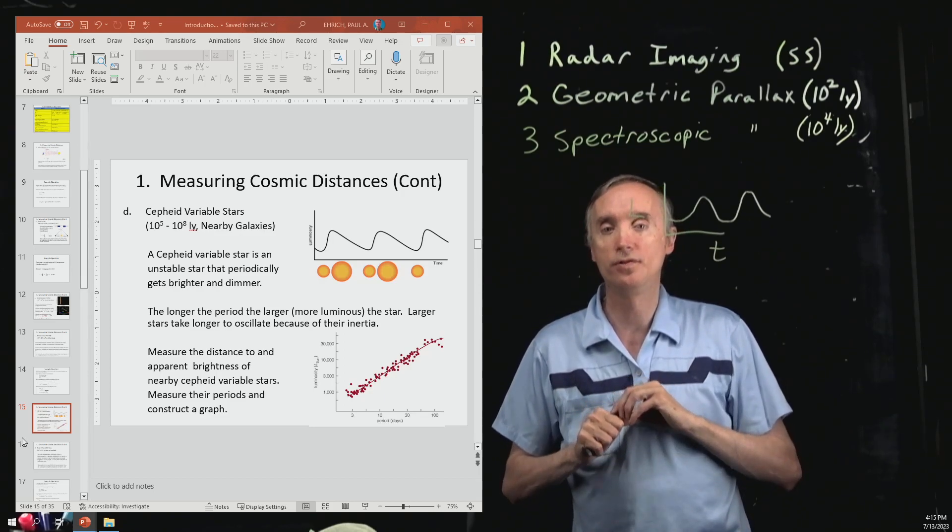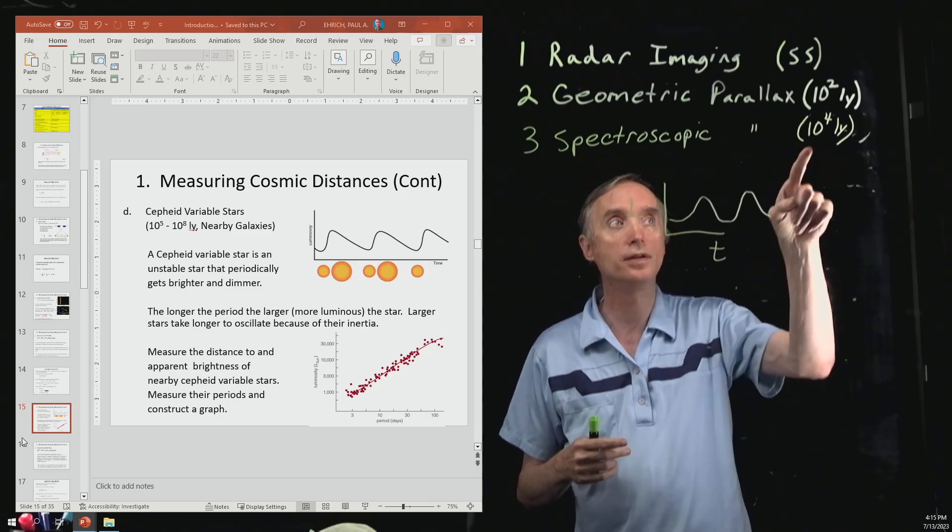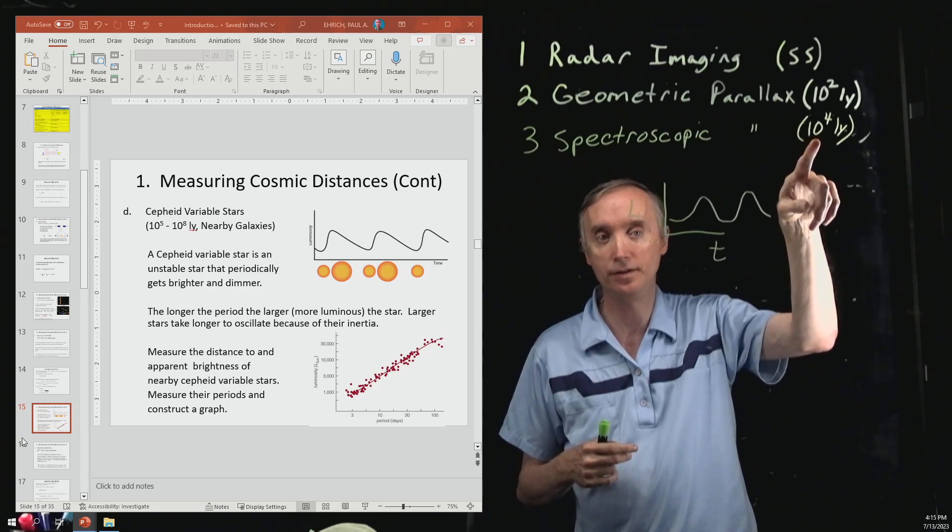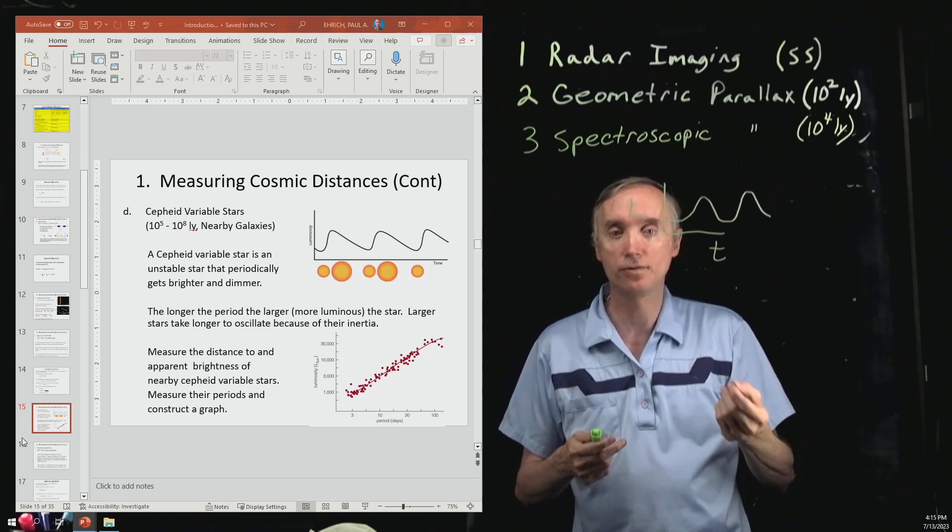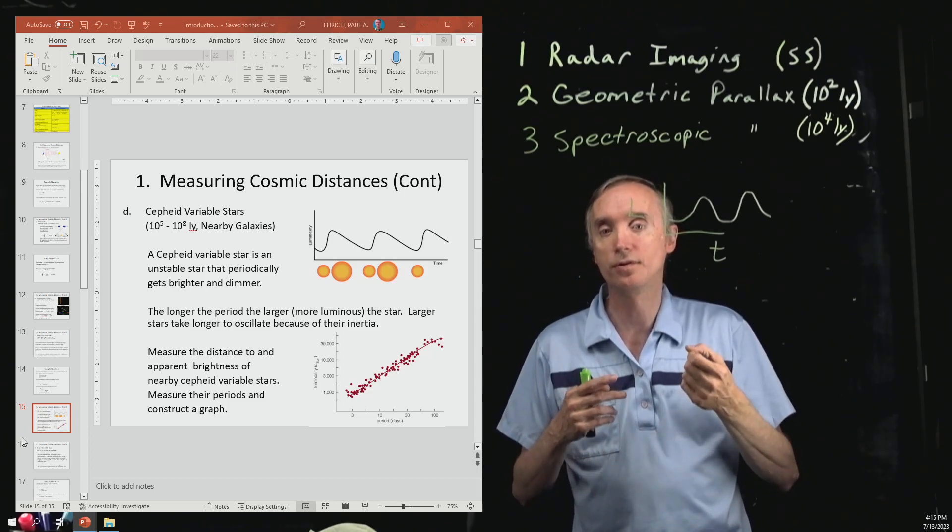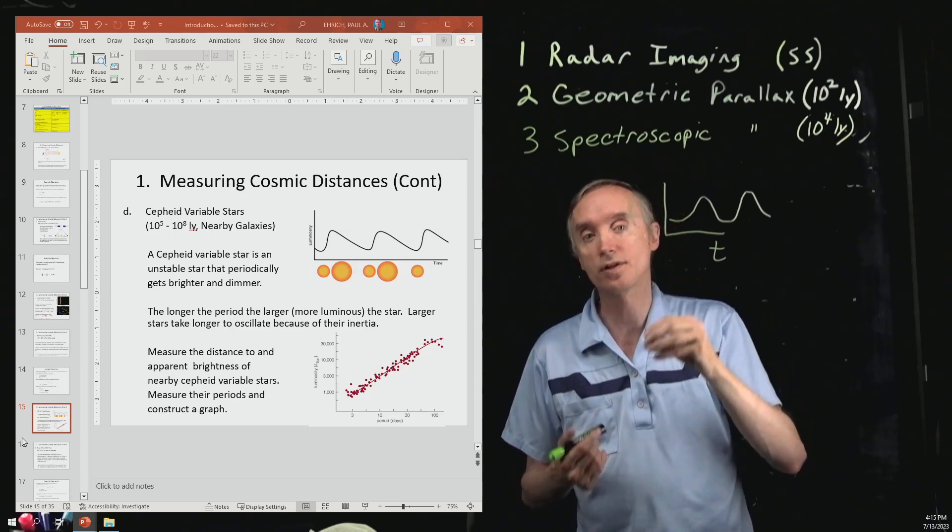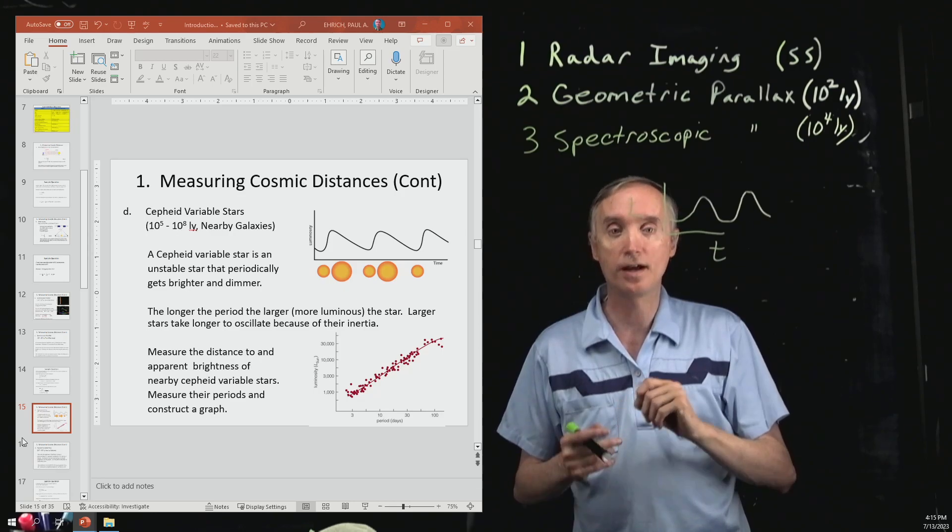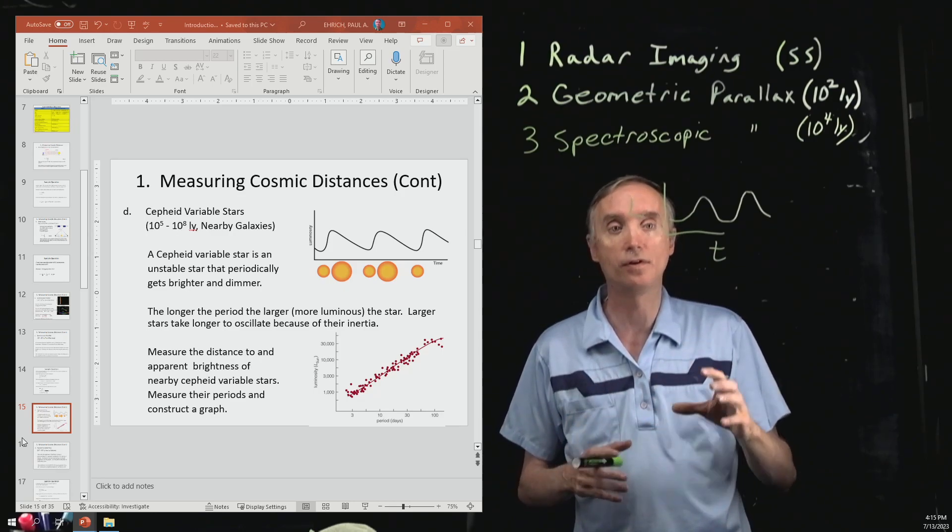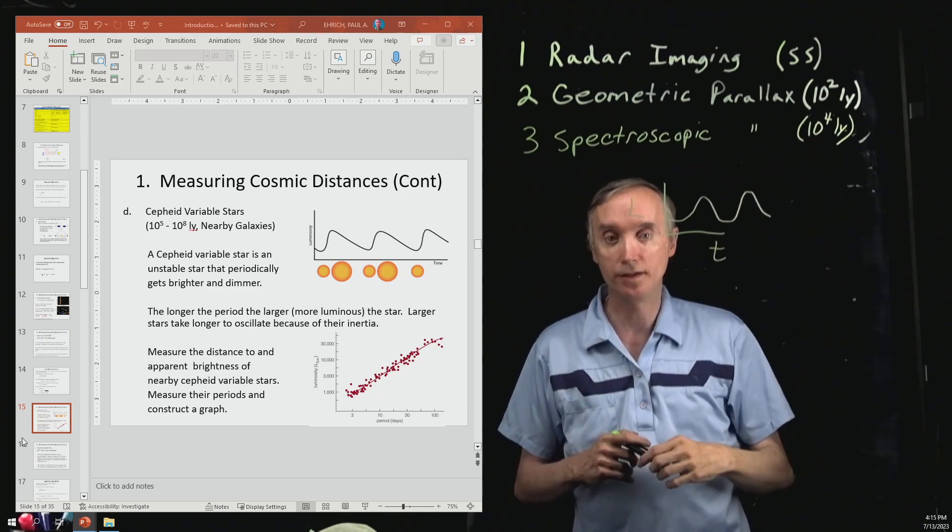Now what we're going to do is find Cepheid variables within 10,000 light years of Earth, and we're going to measure the distance to those Cepheid variables. We're also going to measure their apparent brightness using a photometer. And then we're going to use the photometry equation to figure out their luminosities. So now we know the luminosities of all the Cepheid variables that are within 10,000 light years of Earth.